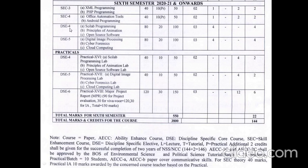In the sixth semester, DSE4 and DSE5 discipline-specific elective papers are available (DSE1, 2, and 3 were covered in the fifth semester). DSE4 includes three subjects: Scilab Programming, Principles of Animation, and Open Source Software — choose any one — for 100 marks (80 external, 20 internal). DSE5 includes Digital Image Processing, Cyber Forensics, and Cloud Computing — choose any one — for 100 marks (80 external, 20 internal).